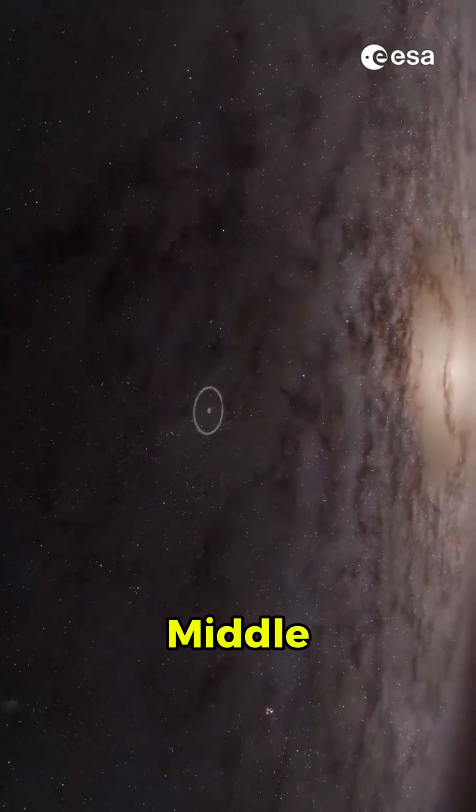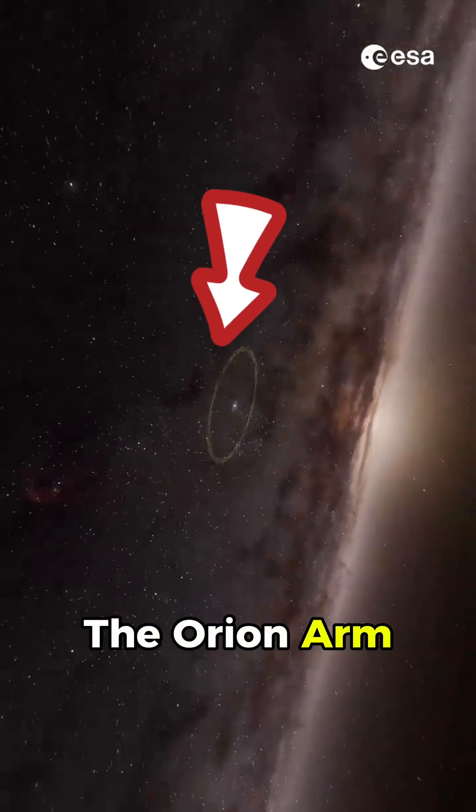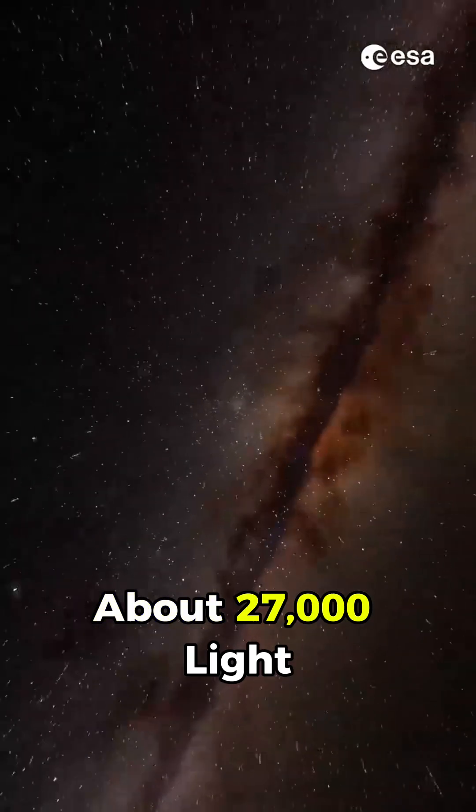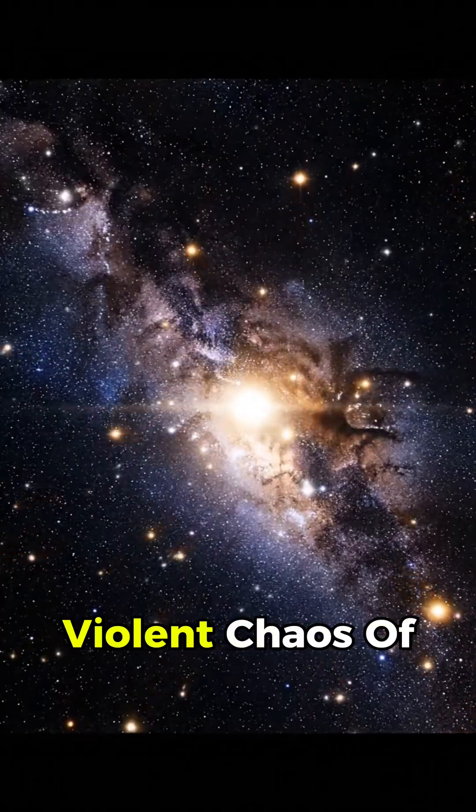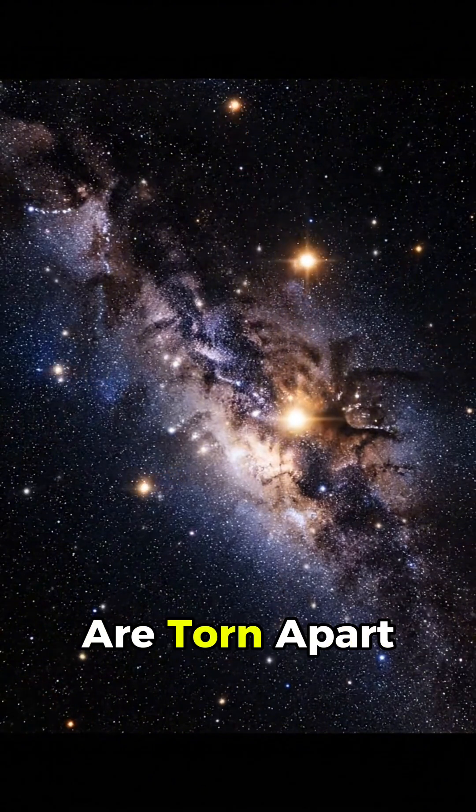And we're not anywhere near the middle. We live in a quiet outer neighborhood called the Orion Arm, tucked between two massive spiral arms about 27,000 light years from the galactic core, far from the violent chaos of the center, where black holes rule and stars are torn apart.